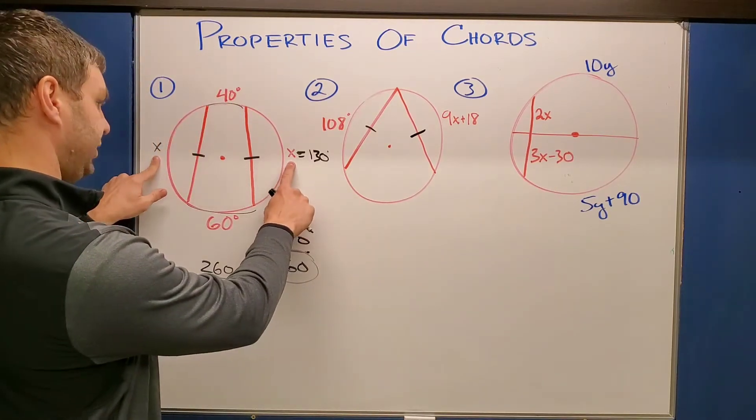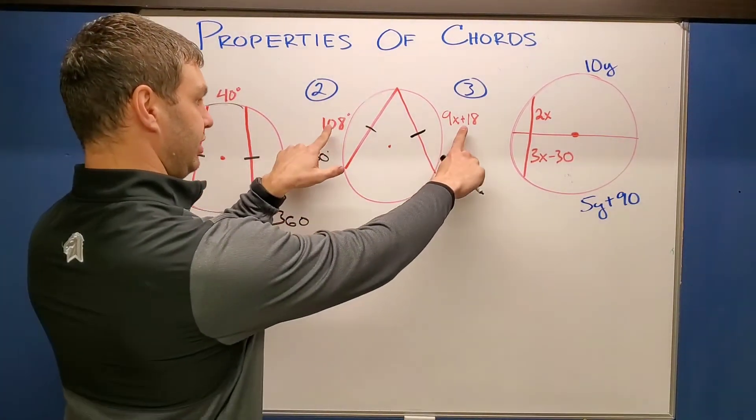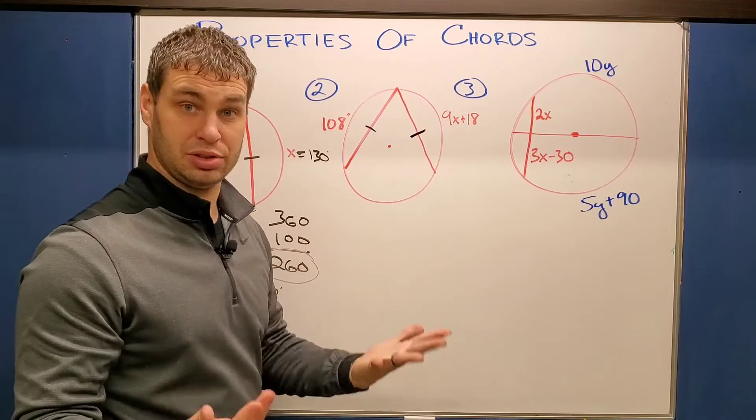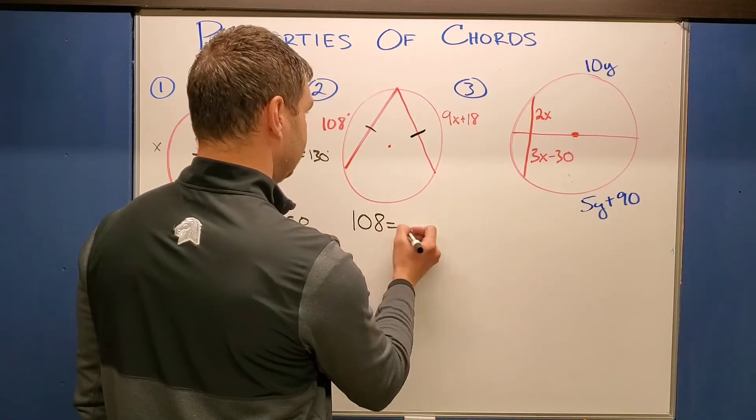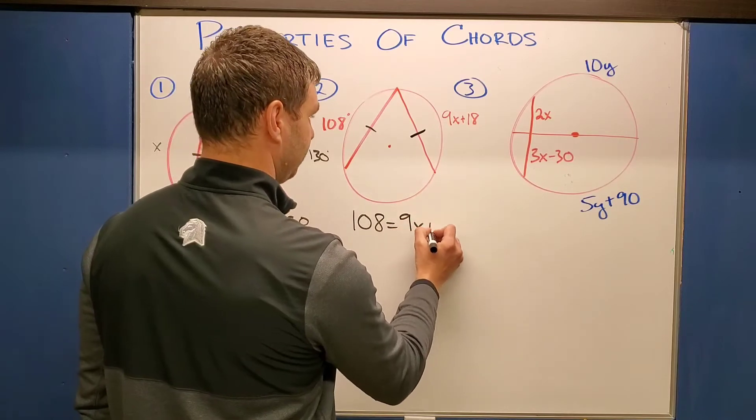Well, similarly, just like we knew that this was X and this was X in this first one, we know that these are also going to be the same. So I can set those two things equal to each other. And that's going to be 108 equals 9X plus 18.